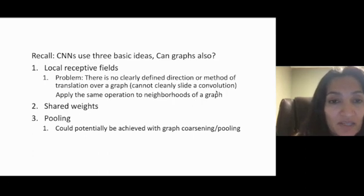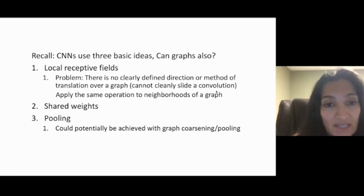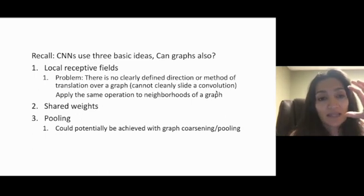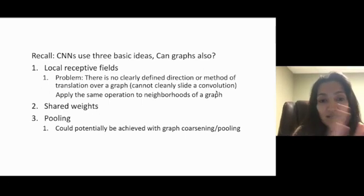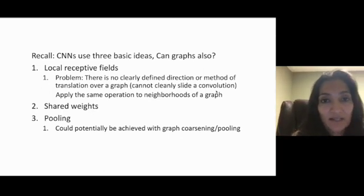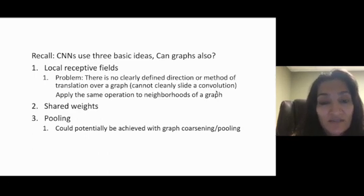The first one was local receptive fields. Here, the convolution operation took this into account because you had these local regions of an image that you were looking at, then the convolution operation of the next node would be a slid-over version of it. Unfortunately, there's no clear notion of sliding or translation on a graph. But what a graph does have is neighborhoods. So one way that local receptive fields have been realized on graphs is by using a vertex and its neighbors and performing an operation using the features of the neighbors.